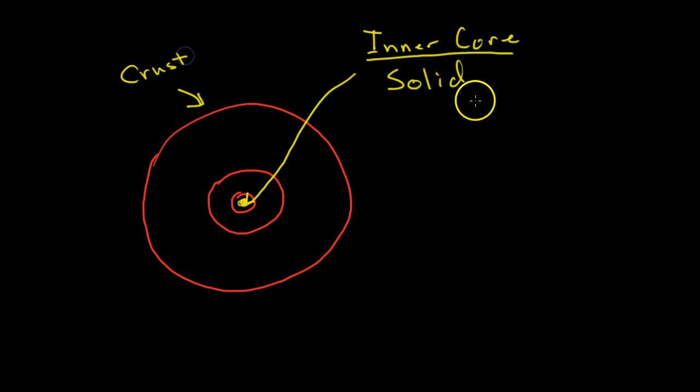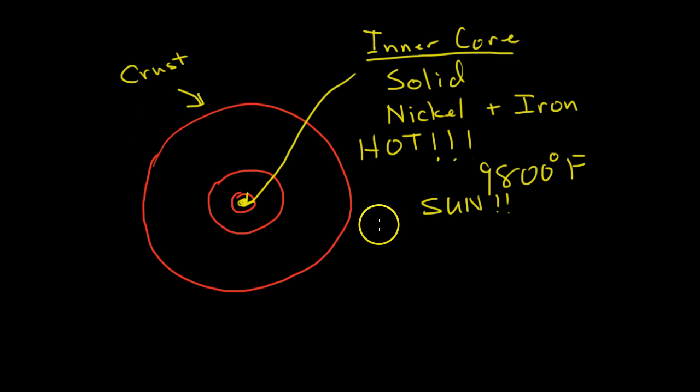All right, the inner core is a solid and it is solid nickel and iron. I think it's mostly iron, I'm not sure. So solid nickel and iron, and it's like crazy hot, somewhere along the lines of 9,800 degrees Fahrenheit hot. Depending on the source that you read, they say that it is as hot as the surface of the Sun, so insanely hot.